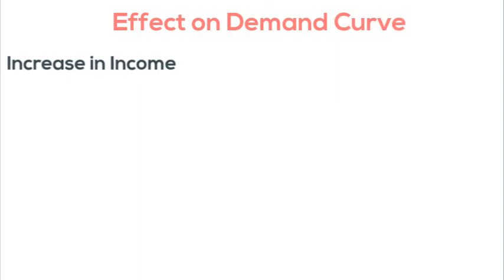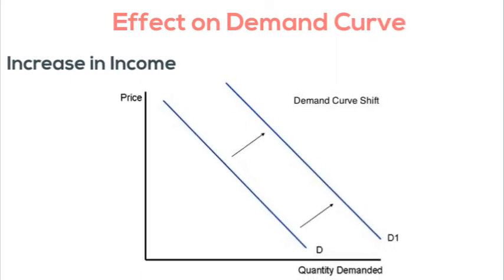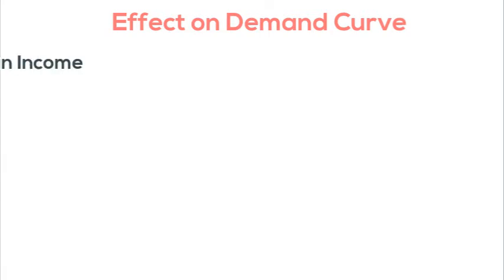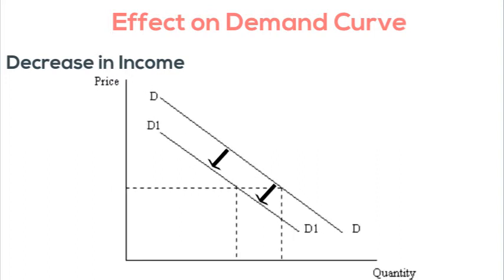Talking about the effect caused upon the demand curve, an increase in the income of the consumers causes a rightward shift in the demand curve, indicating an increase in the overall demand of the good or service. On the other hand, a decrease in the income of the consumers will cause a leftward shift in the demand curve, indicating an overall decrease in the demand.